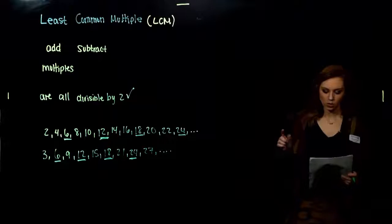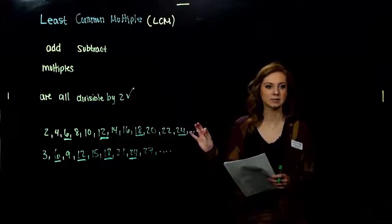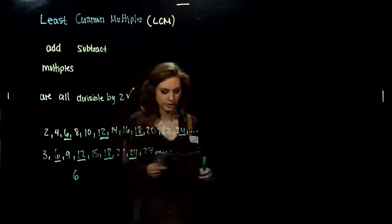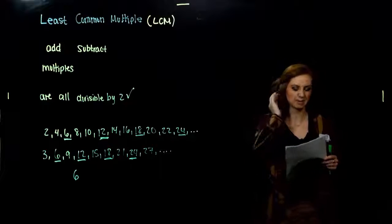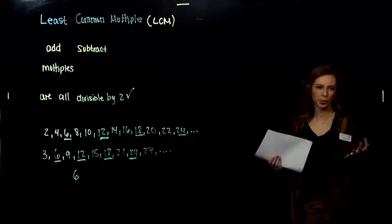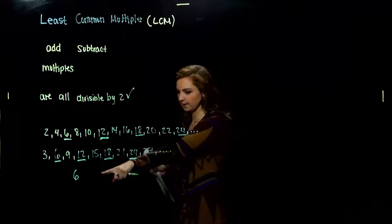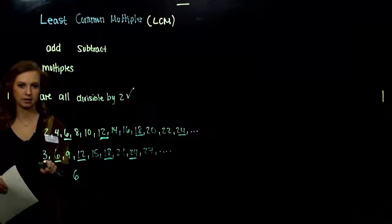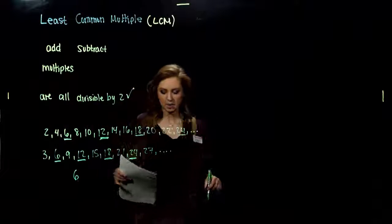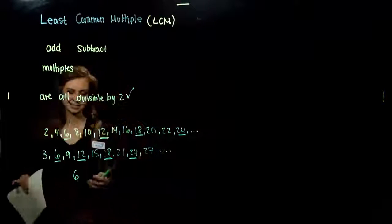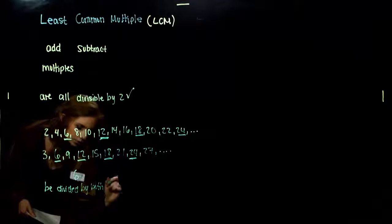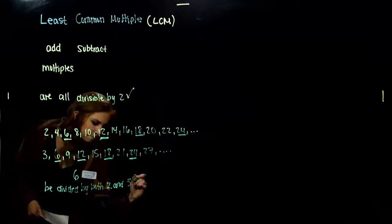We want to find the least, or smallest, of those common multiples. Between 2 and 3, the least common multiple is 6 — the smallest one they share in common. We abbreviate this as LCM, so you'll see that a lot. The key point: the least common multiple has to be divisible by both 2 and 3 with no remainder. We've designed it to work that way.